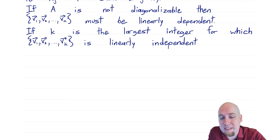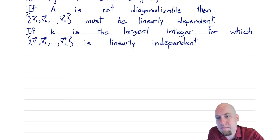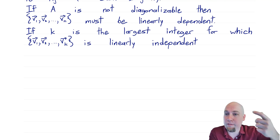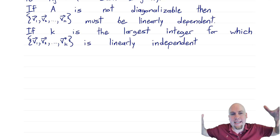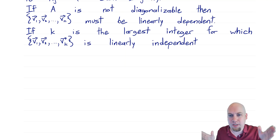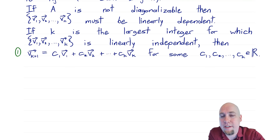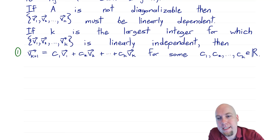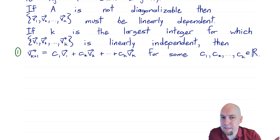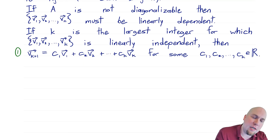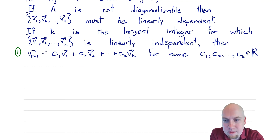Let k be the size of this set — checking: is v1 linearly independent? If yes, then check is {v1, v2} linearly independent? If yes, check {v1, v2, v3}? Keep going until you find the largest linearly independent set, then stop — just before you hit linear dependence. Because the set with just one more vector is linearly dependent, that means vk+1, the vector just barely not in this set, must be a linear combination of the first k vectors. None of those first k vectors are linear combinations of each other, since that set is linearly independent. Call that equation one.